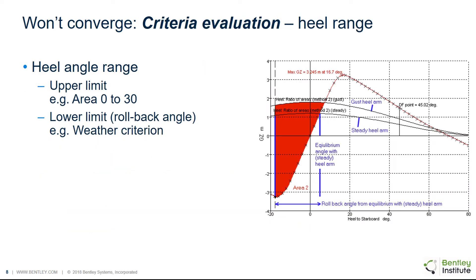Sometimes the limiting KG analysis cannot converge because the criteria cannot be evaluated. So you need to check the heel angle range. For example, if you have a criterion which calculates the area from 0 to 30 degrees, then ensure that you go up to an angle of at least 30 degrees. If you are using a criterion where a rollback angle is required, like the weather criterion, then make sure that your starting heel angle is sufficiently low — it will probably need to be negative.